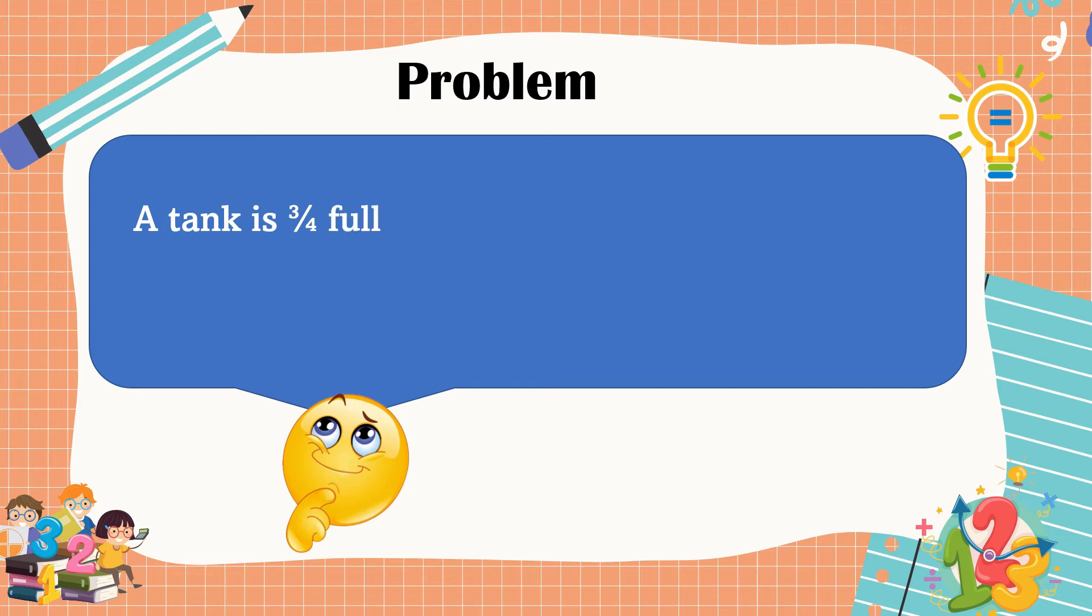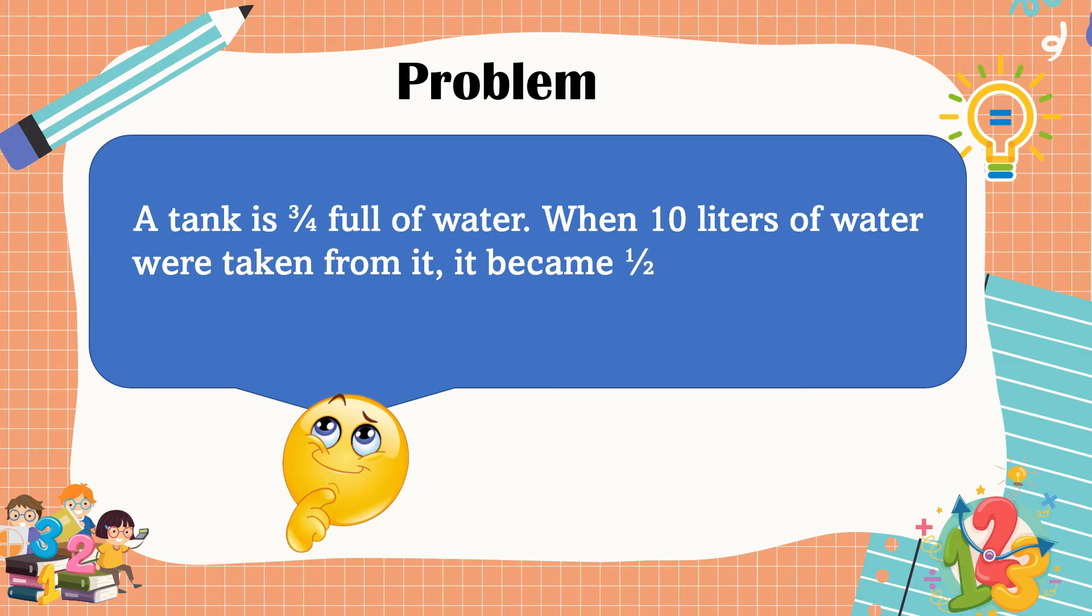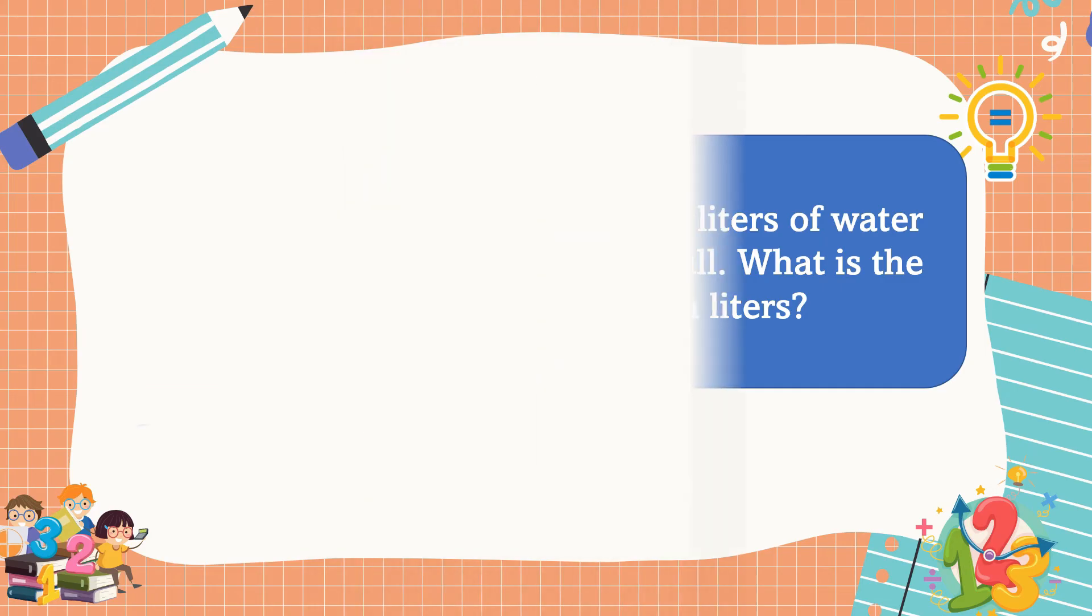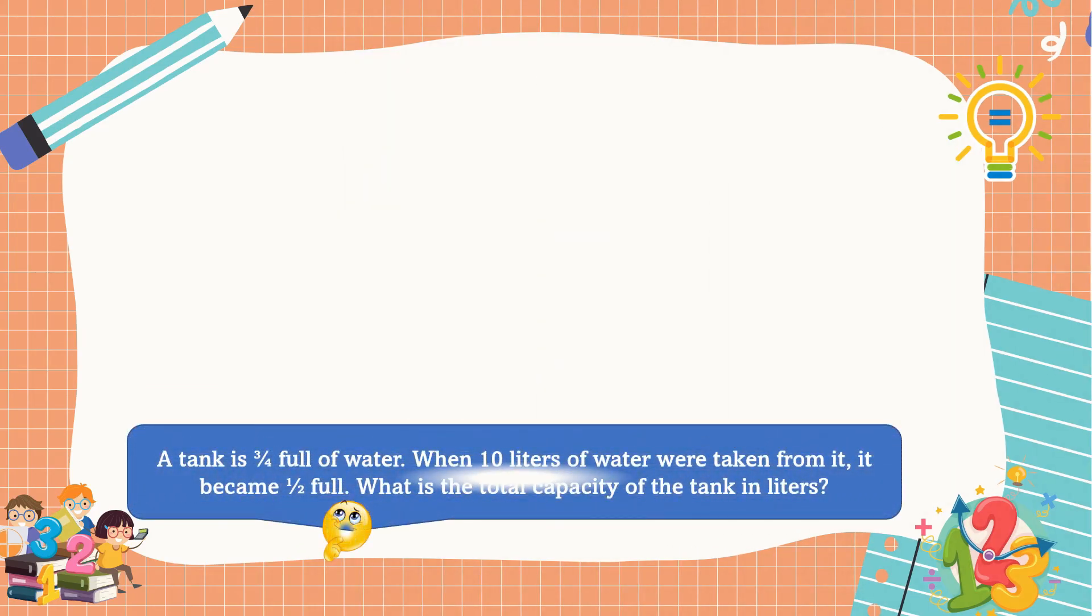This is our second problem. A tank is 3/4 full of water. When 10 liters of water were taken from it, it became 1 half full. What is the total capacity of the tank in liters? Our second problem is a non-routine problem. We use an illustration to help us analyze how we are going to solve the problem.